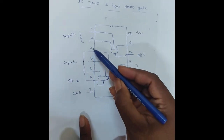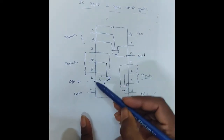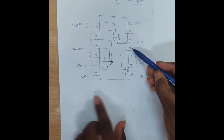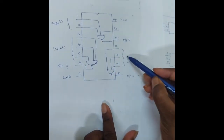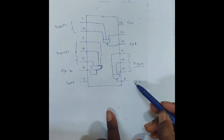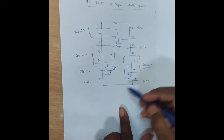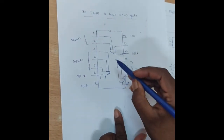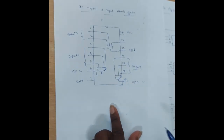Next, pins 3, 4, and 5 are the inputs and the 6th pin is the output. Pins 11, 10, and 9 are the inputs and the 8th pin is the output. In total, this IC contains three 3-input NAND gates.